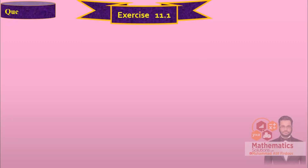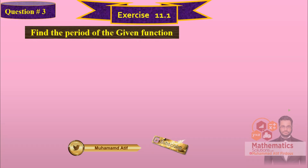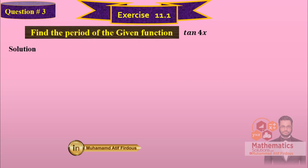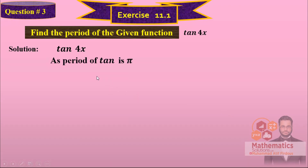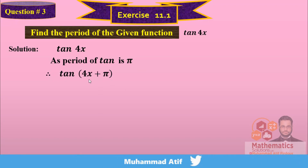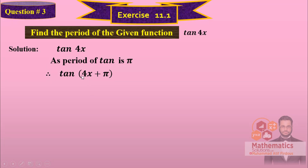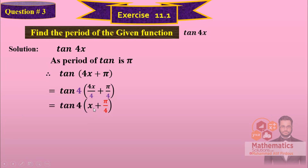Next, question number 3: again find the period of the given function, which is tan(4x). As the period of tangent is pi, we just add pi in the angle of tan(4x). Then to make the coefficient of x equal to 1, we take 4 common and divide pi by 4. So the fours cancel and the period of tan(4x) is pi over 4.